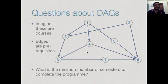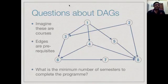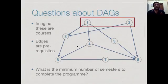Let us look at a different question about DAGs. Suppose we have this DAG and the vertices represent courses and the edges are prerequisites. These are courses we have to complete to finish a degree. Every course requires a semester but we can do more than one course in a semester. So the question is: what is the minimum number of semesters needed to complete this program consisting of these 8 courses with these prerequisites? Clearly, we can start by doing courses 1 and 2 in the first semester because they have no prerequisites.